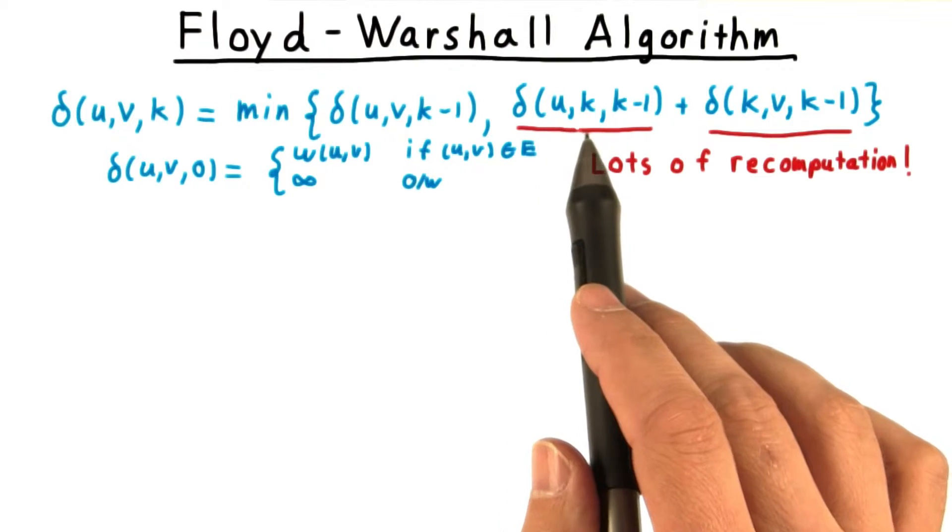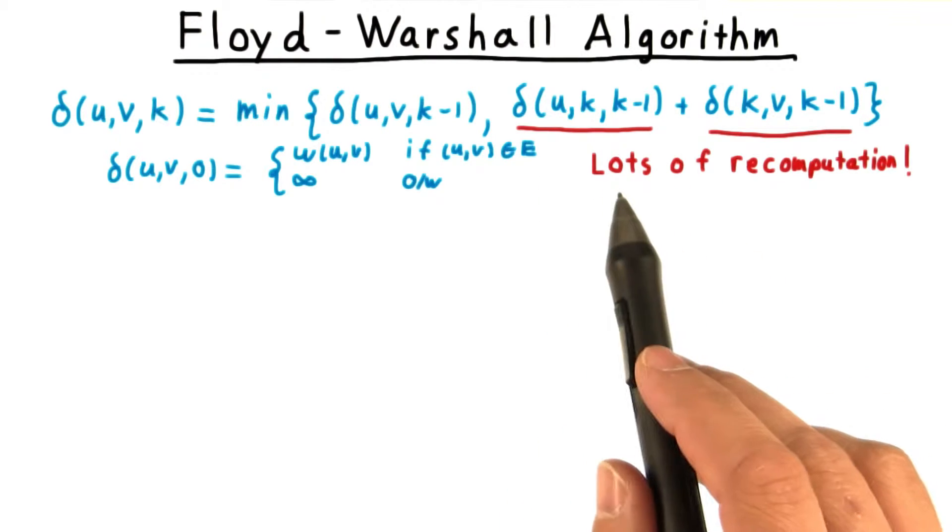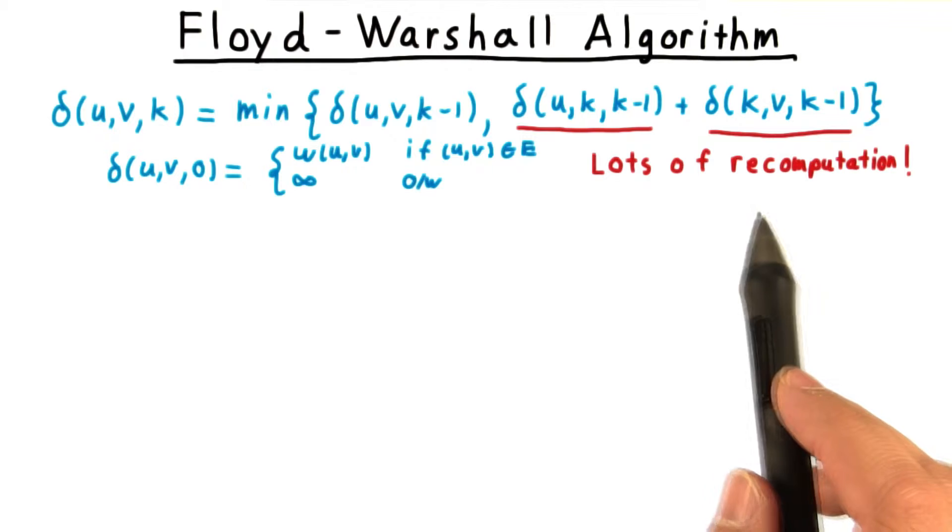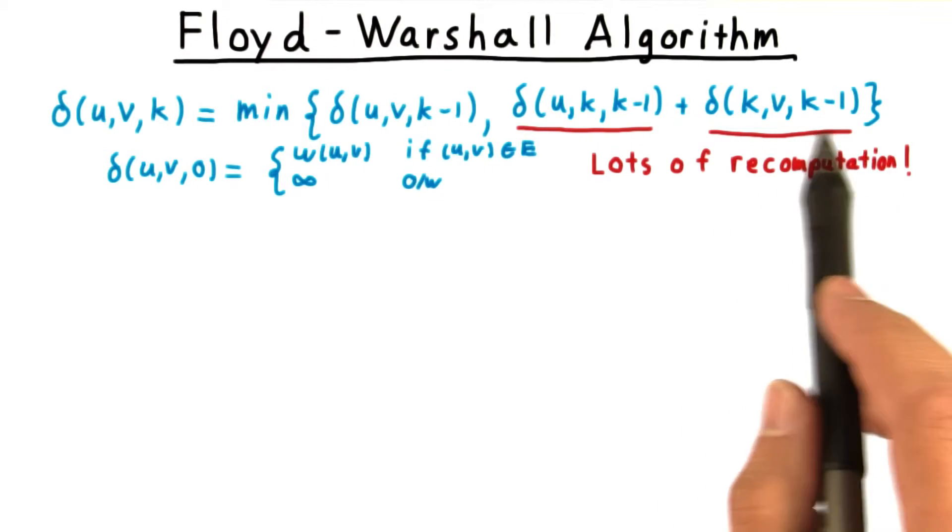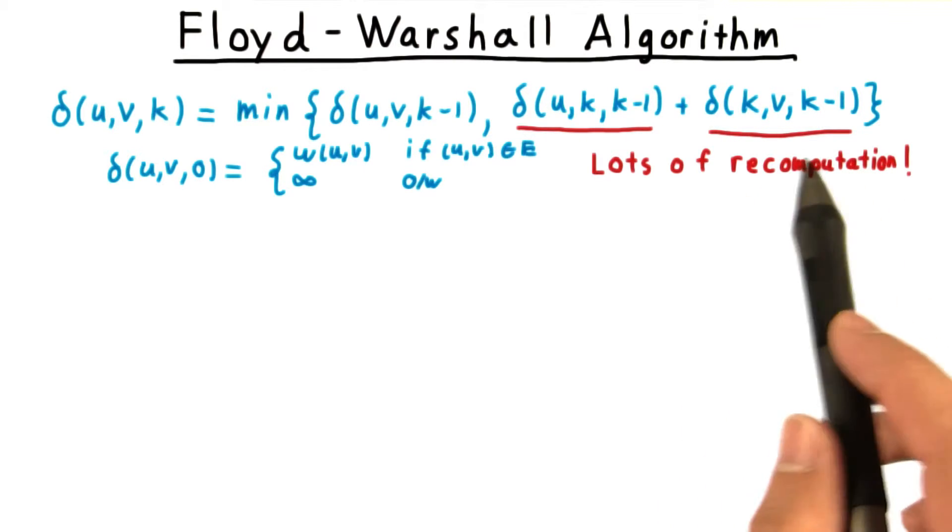Delta u k k minus 1 would be computed for every vertex v. And delta k v k minus 1 would be computed for every vertex u in every iteration.